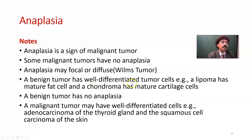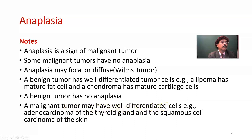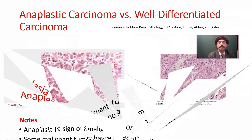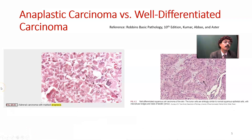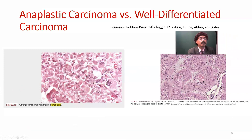A benign tumour has well-differentiated tumour cells. For example, a lipoma has mature fat cells containing fat, and a chondroma has mature cartilage cells that produce the ground substance of cartilage. A benign tumour has no anaplasia. A malignant tumour may have well-differentiated cells — for example, adenocarcinoma of the thyroid gland and squamous cell carcinoma of the skin. So not necessarily all cancers will be anaplastic.